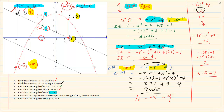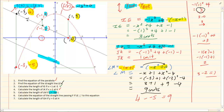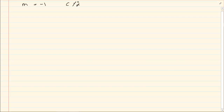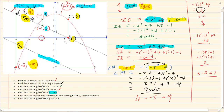The next question asks for the equation of a straight line passing through F, given that LE is parallel to this new line. Parallel means their gradients are equal. We know the gradient of LE is -1, which means immediately that the gradient of the second line is also -1. Because parallel lines have equal gradients, m = -1.